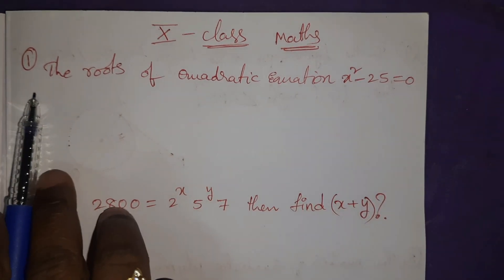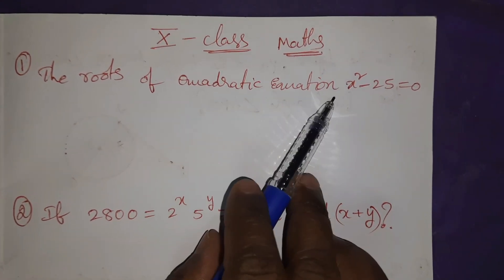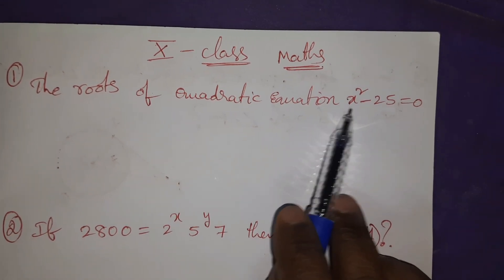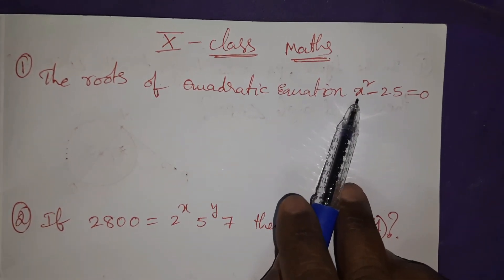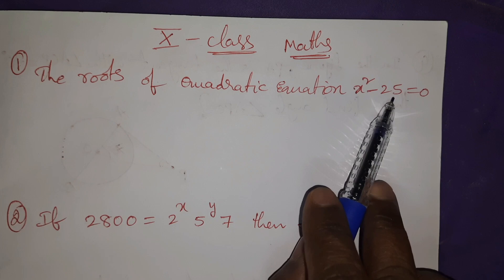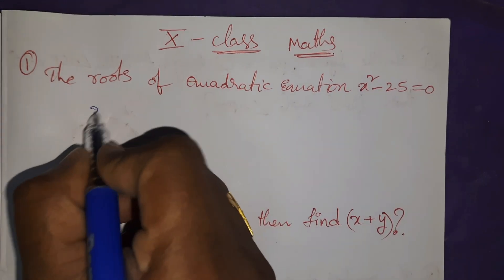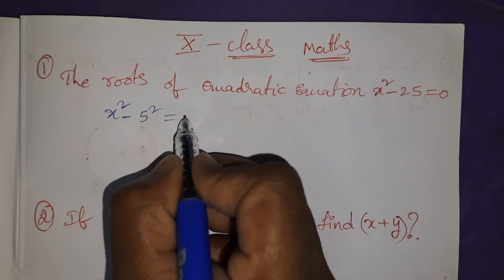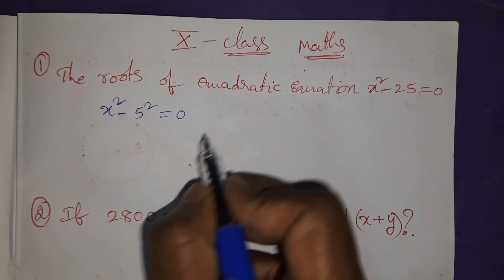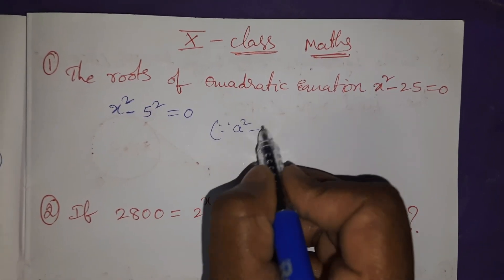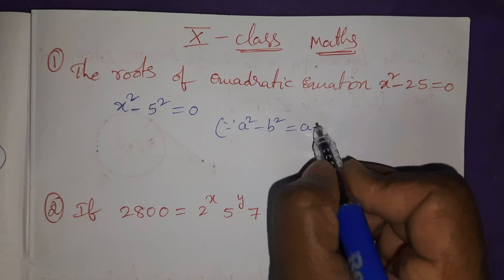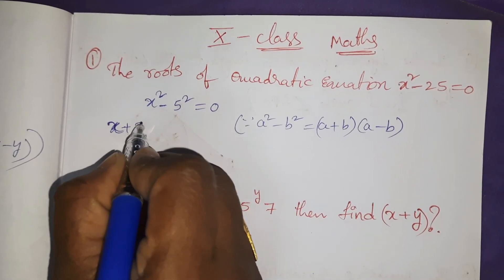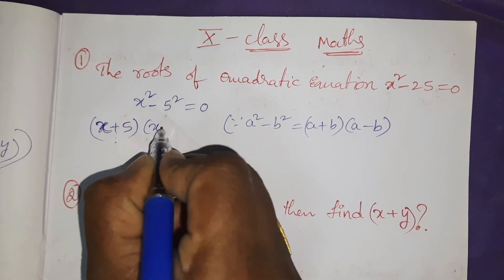Important questions. The first question: the roots of the quadratic equation x² - 25 = 0. It is a quadratic equation, only x² term and constant is there. So x² - 25 I can write as 5², it is looking like a² - b² formula. So (x + 5)(x - 5).